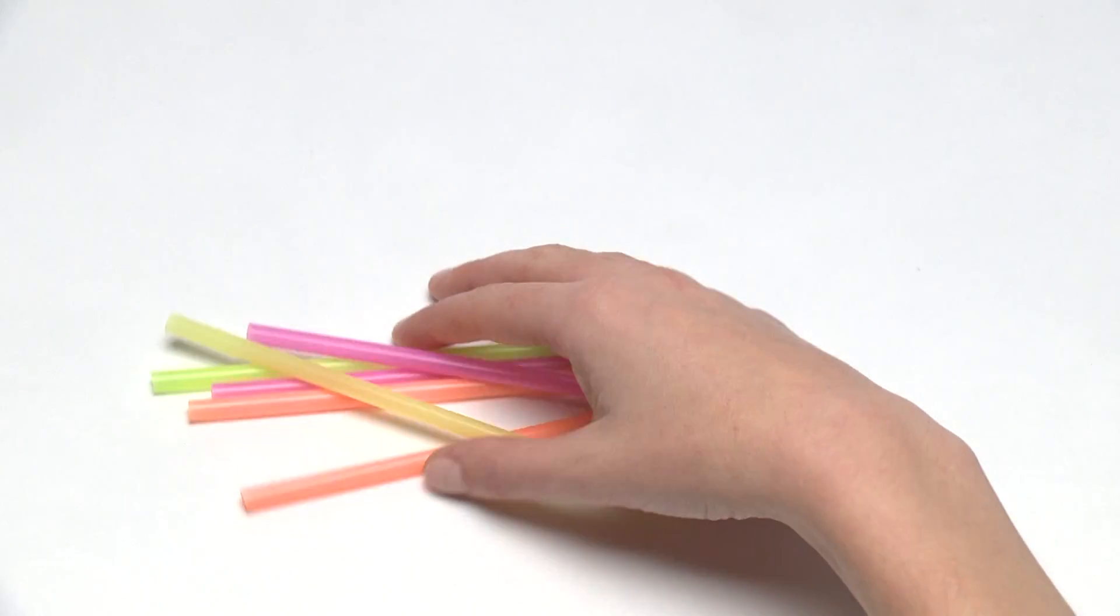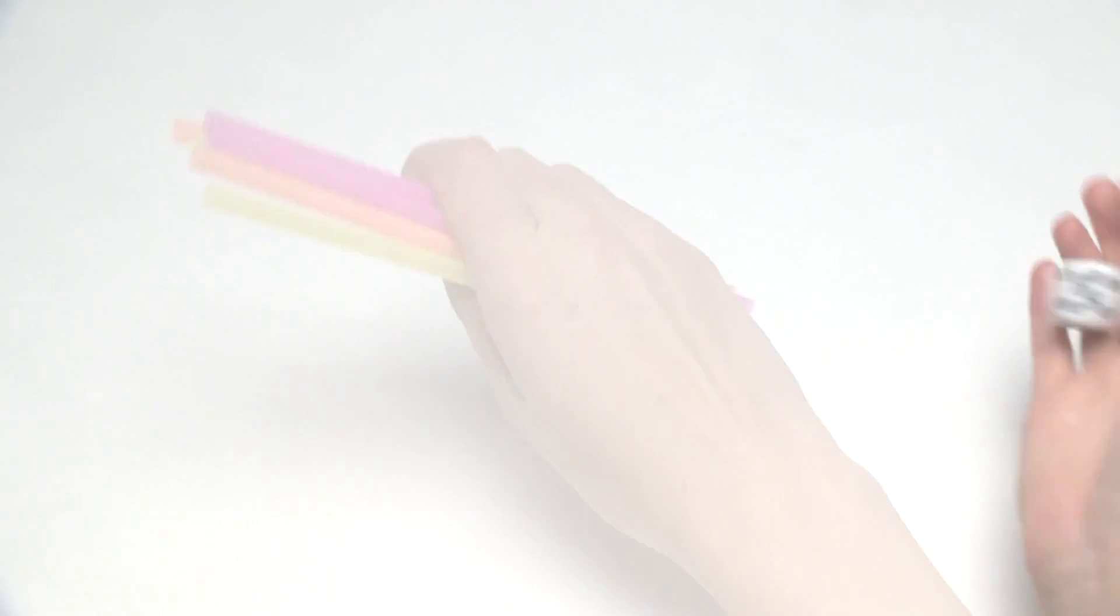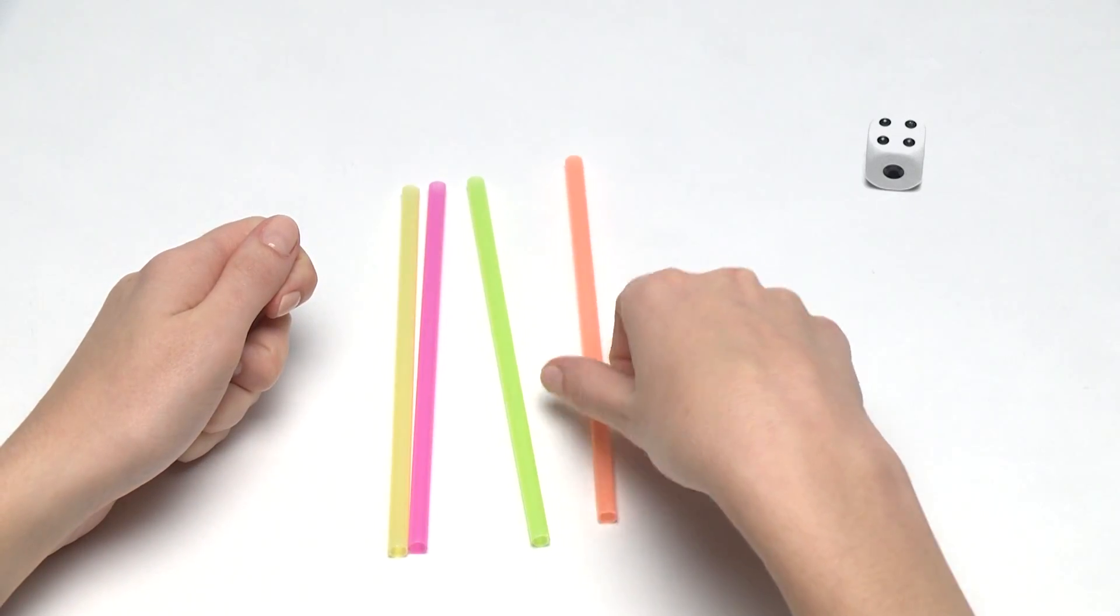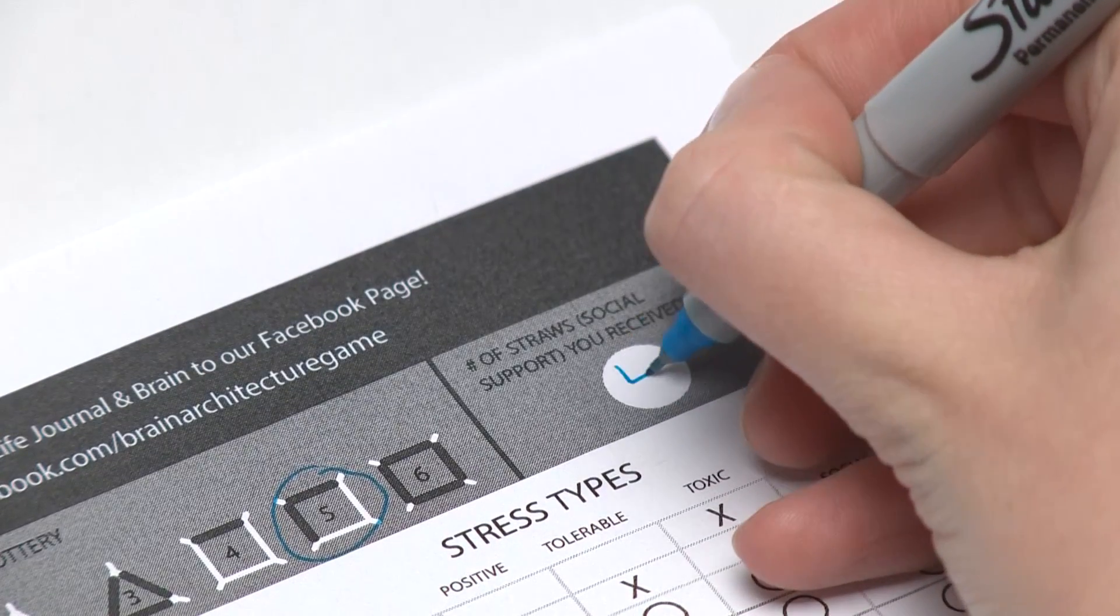Next, you need to find out the number of social supports you have at birth. Roll the die again and collect that number of supports to use later in the game. Mark the results of both rolls on your life journal.